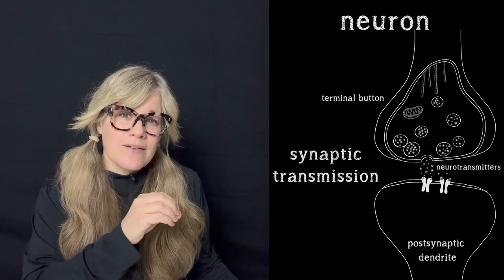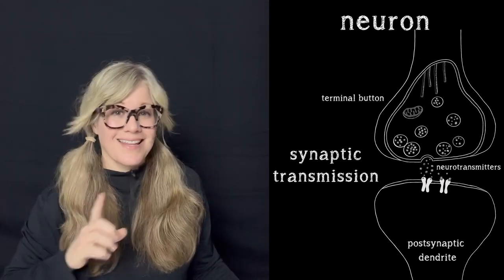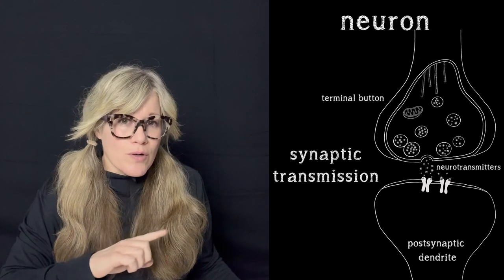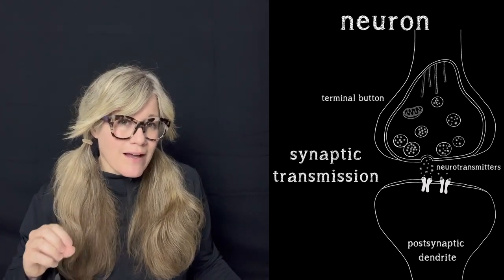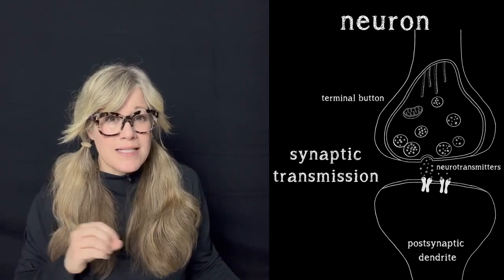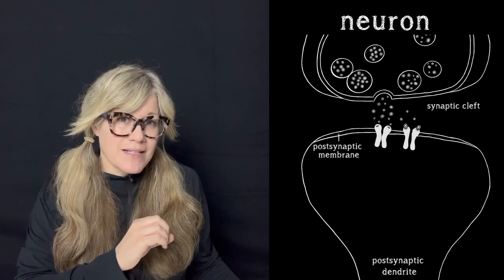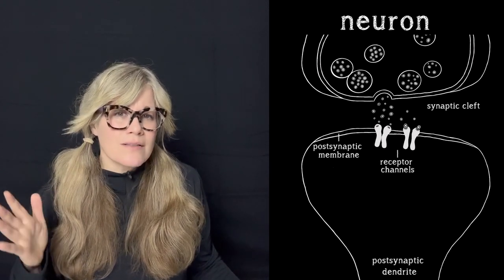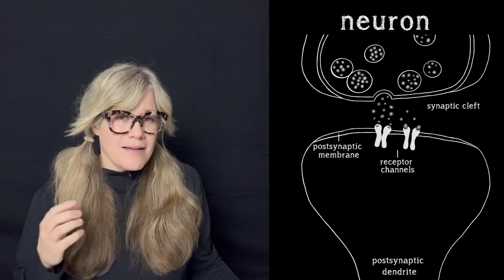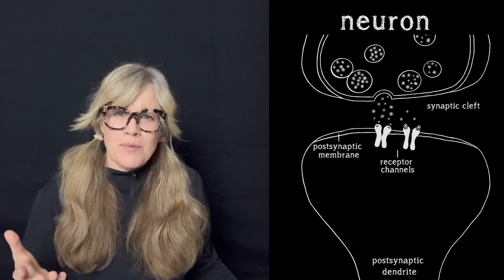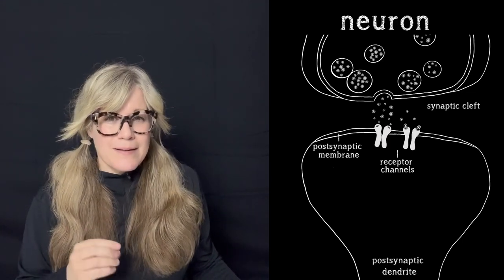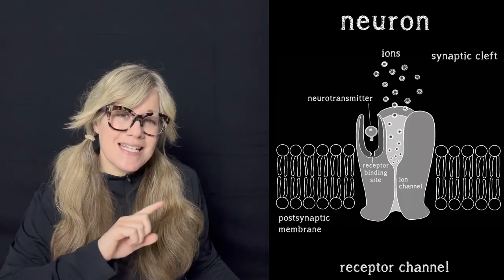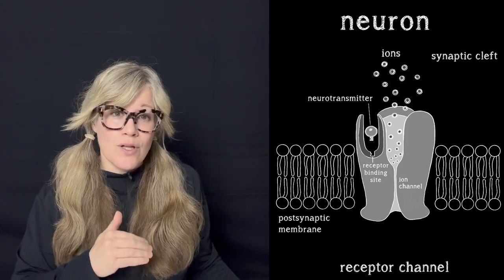The presynaptic button has just released a load of chemical neurotransmitter molecules into the fluid-filled extracellular space that is the synaptic cleft. They diffuse across the synaptic cleft to the postsynaptic or receiving dendrite. Dendrites can be smooth or they can have spines. Both are bordered by the cell's plasma membrane, but this particular area of the plasma membrane where the postsynaptic dendrite receives the neurotransmitter is called the postsynaptic membrane. This postsynaptic membrane contains special proteins called receptor channels.